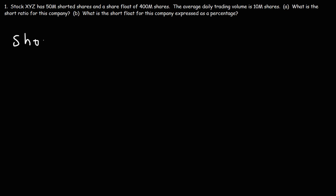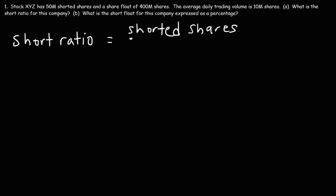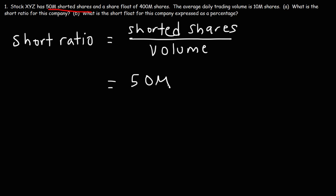The formula we need to calculate the short ratio is: short ratio equals the number of shorted shares divided by the average daily trading volume. In this problem, we have 50 million shorted shares and an average daily trading volume of 10 million. So 50 divided by 10 is 5 — that is the short ratio for this company.